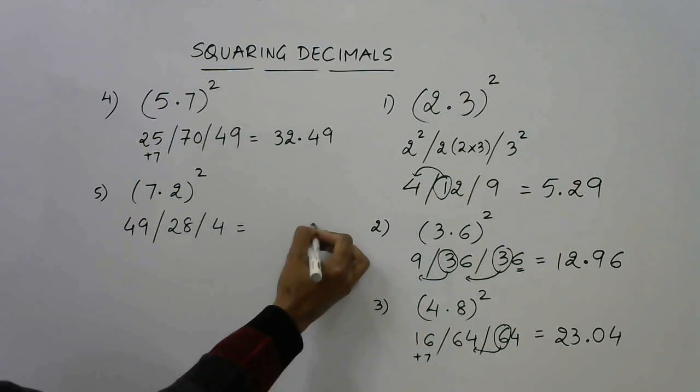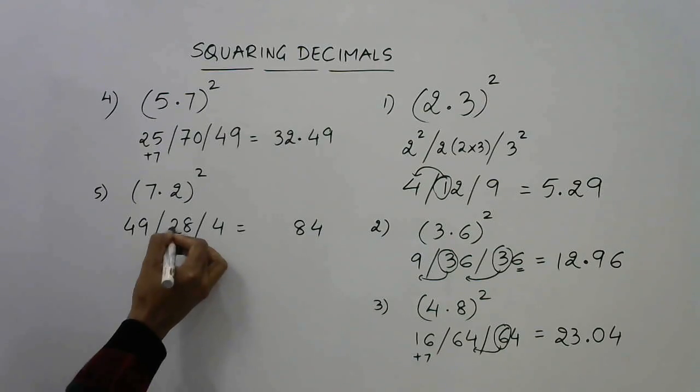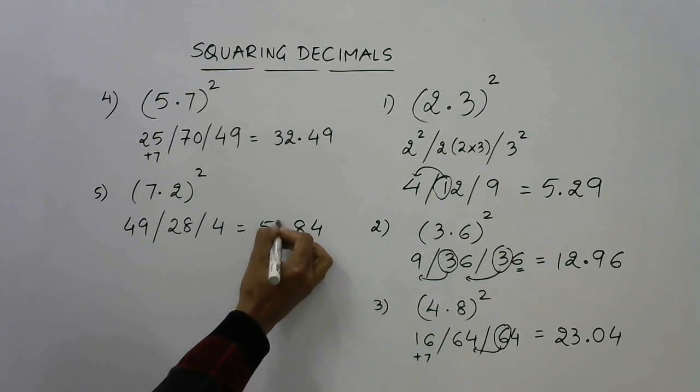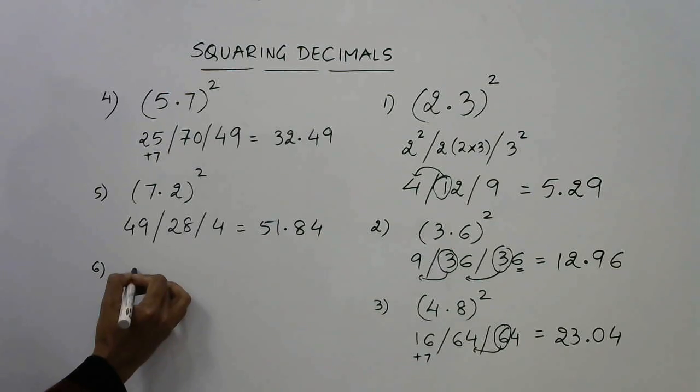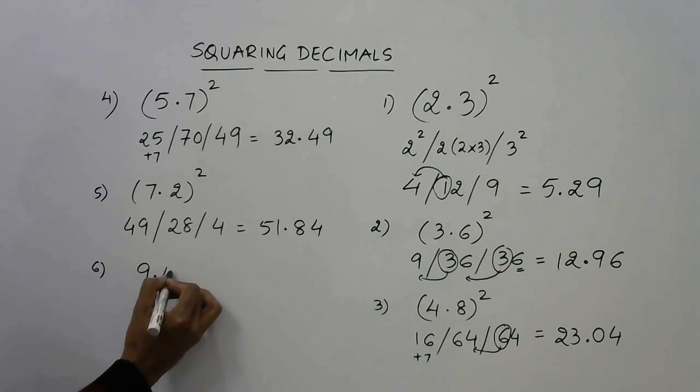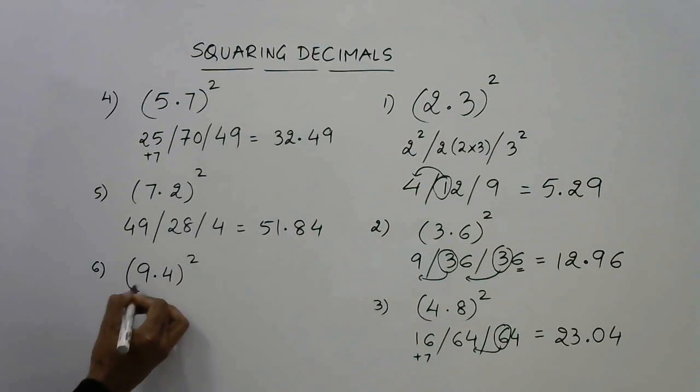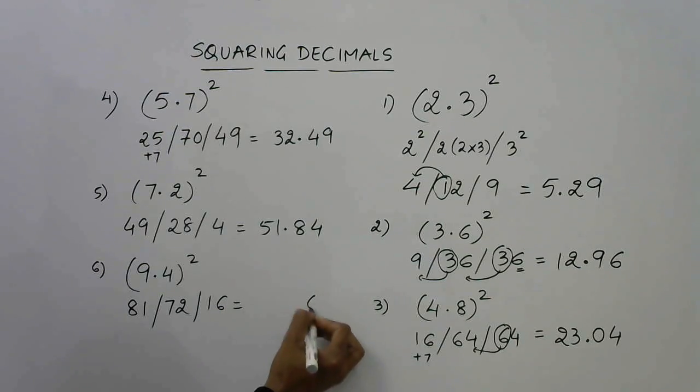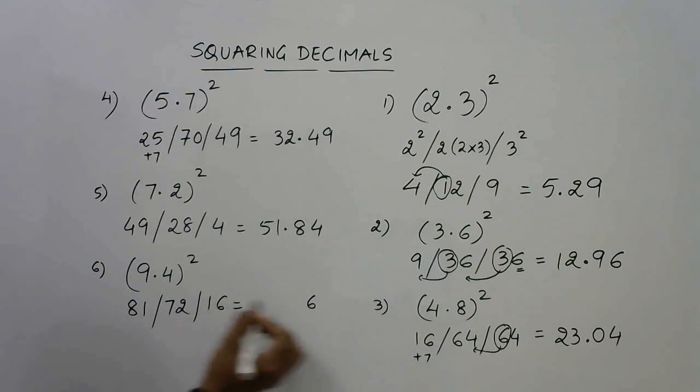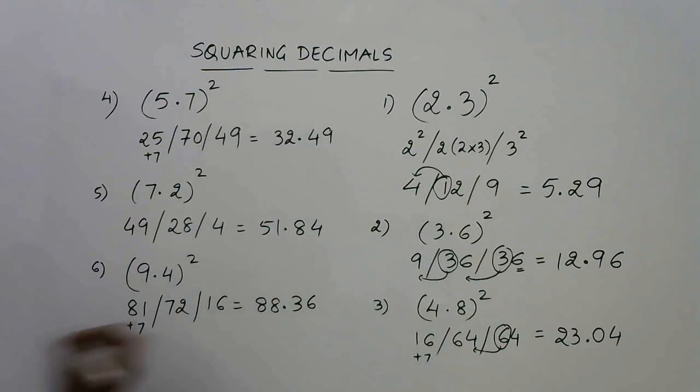Let's have (9.4)². 9² is 81, 9 times 4 is 36, becomes 72, and 4² is 16. So 6 retained, 1 comes here: 73, 3 retained, 7 comes here: 88. So we have 88.36 as the square of 9.4.